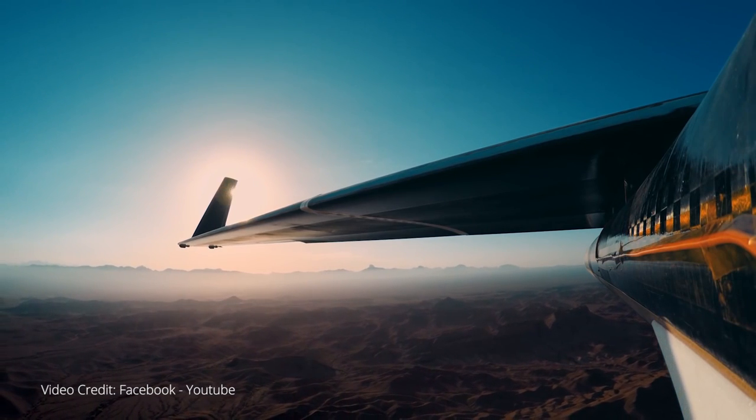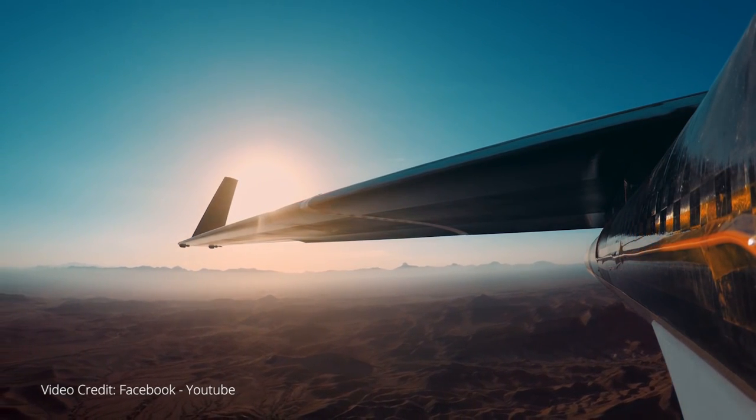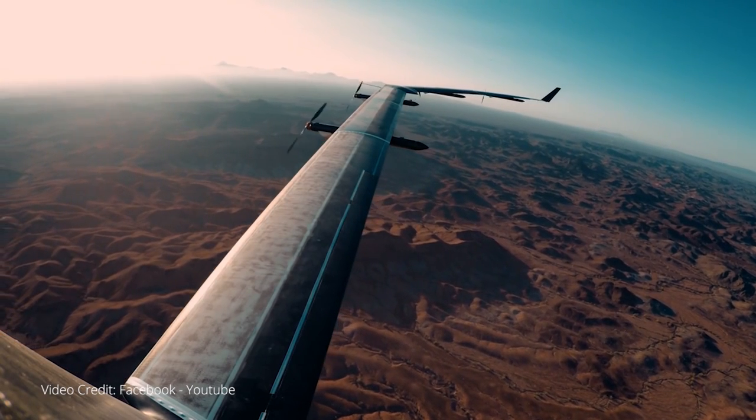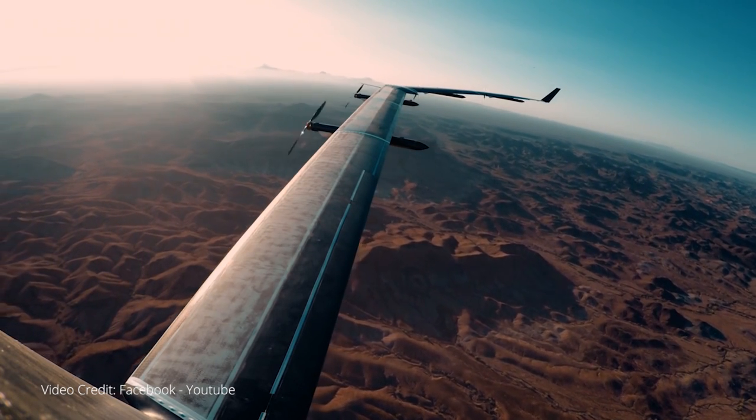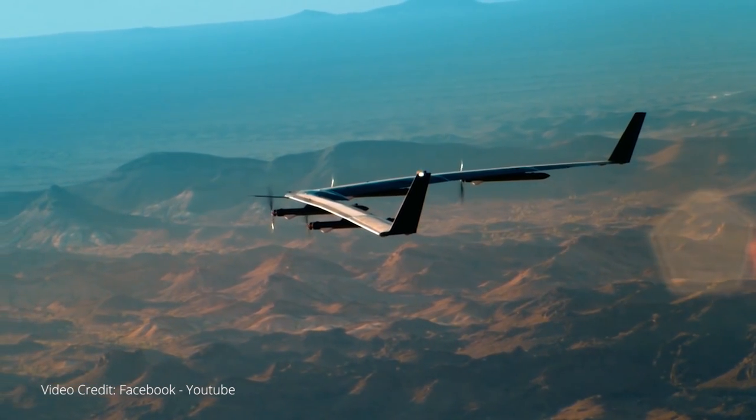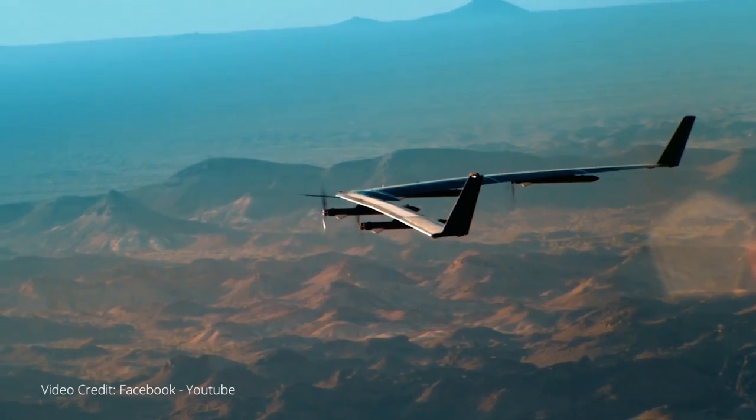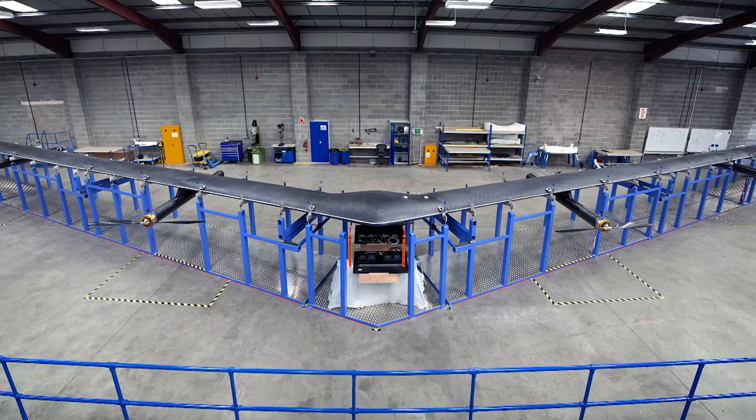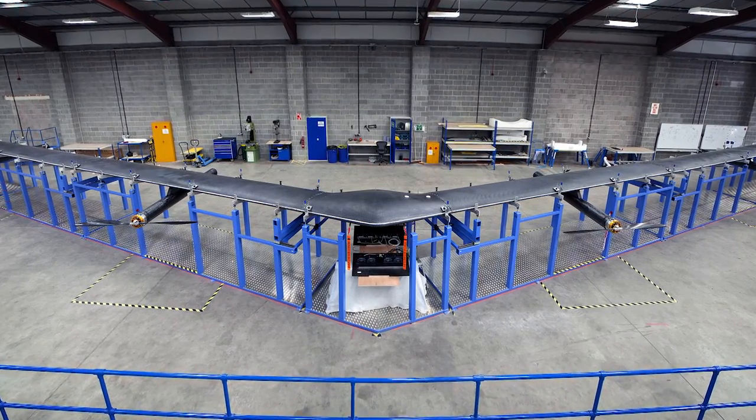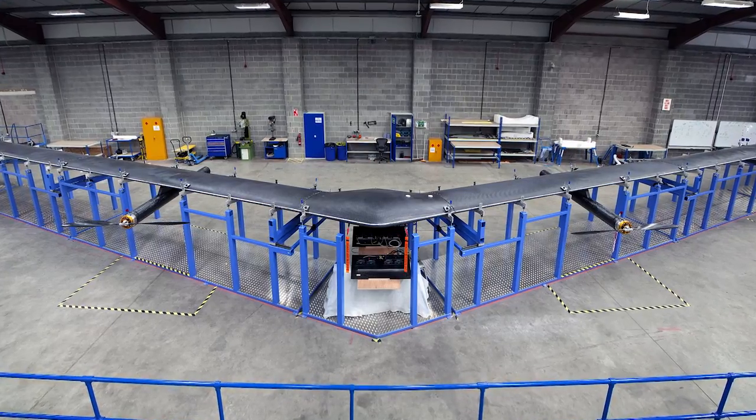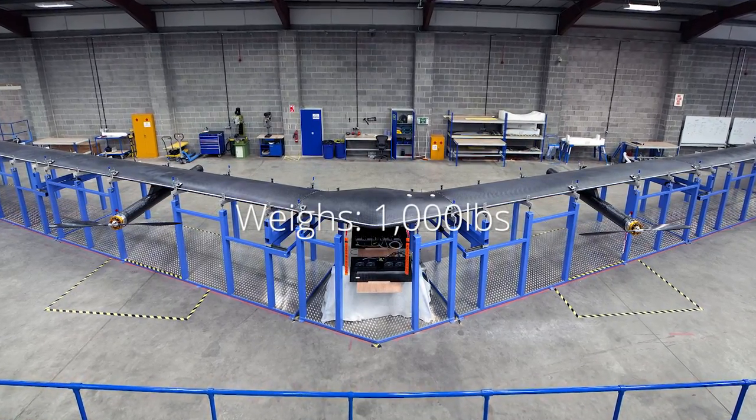Aquila will be able to circle a region up to 60 miles in diameter, beaming connectivity to Earth from an altitude of 60,000 feet using lasers and wave systems. The drone's wingspan is larger than a Boeing 737, and it weighs just 1,000 pounds.